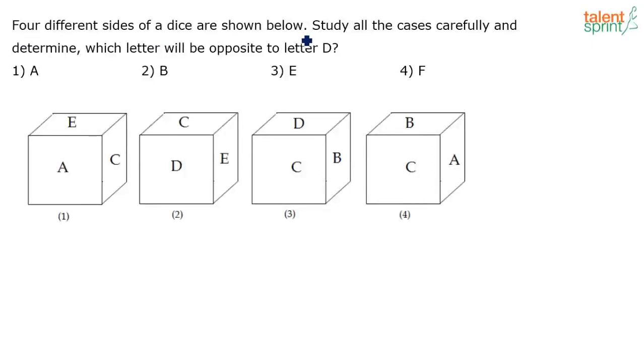Four different sides of a dice are shown below. Study all the cases carefully and determine which letter will be opposite to letter D. We have to find out which letter will be opposite to letter D. Four different faces have been shown. In each face we can see three of the sides, and based on the figures here we need to find out what will come opposite to D.